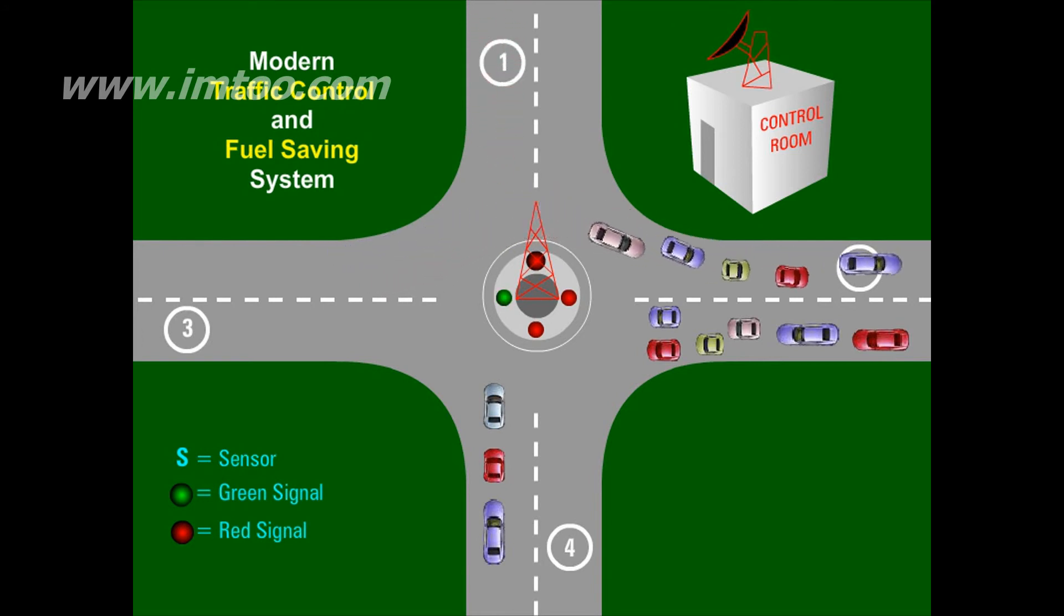Now, the same process is repeated. The sensor senses the maximum vehicle and gives the results to the control room, consequently giving green light first to lane 3, then to lane 2 and then to lane 4. Thus, saving our valuable fuel. While the vehicles are running...